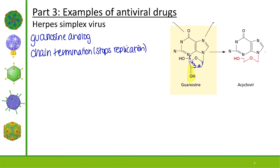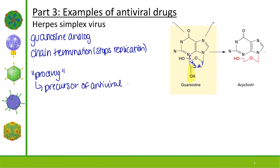It turns out acyclovir is a prodrug, meaning it is a precursor of an antiviral drug. When this drug first enters a cell — whether administered orally or topically — it is not active. It has to be activated within the cell before it acts as a chain terminator. We tend to use acyclovir against herpes simplex viruses: cold sores, genital herpes, and shingles as well.